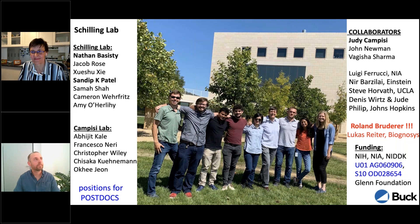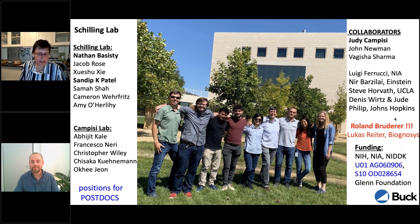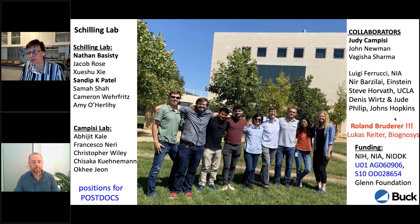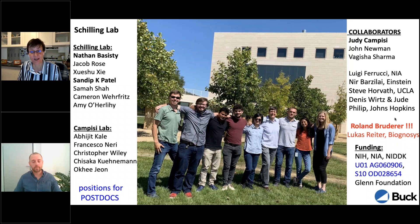What do you think is the reason that there are proteins in the direct DIA library that are missing from the 24-fraction fractionated library? We only got this data recently and haven't fully looked into that yet. I think it shows that different approaches can find more — similar to how searching with different search engines yields slightly different results. It was actually a little surprising; we didn't expect it.